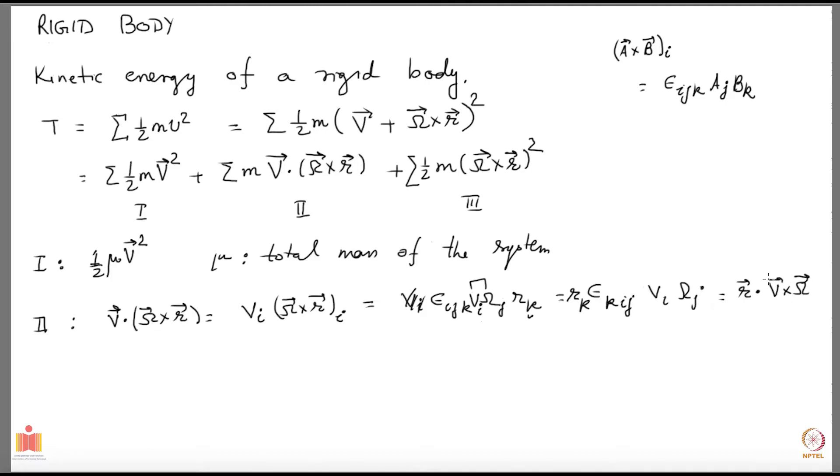Which is same as r dot v cross omega. This k is the free index which means this gives you the v cross omega kth component. And then you have rk, rk times this thing summed over k is the dot product. So r dot v cross omega. I have freed up r from v and omega.